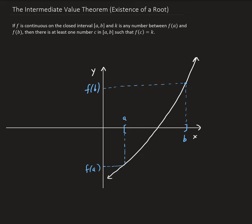So, for a we have f of a, for b we have f of b. There's our interval, and this is our continuous function. I want to talk about this point here — this is the root of our function, so we're going to call it c.